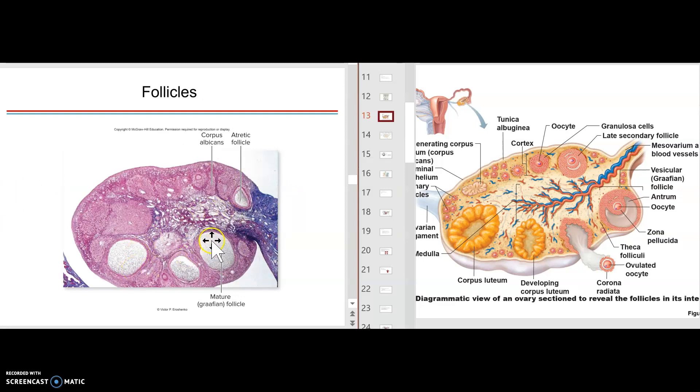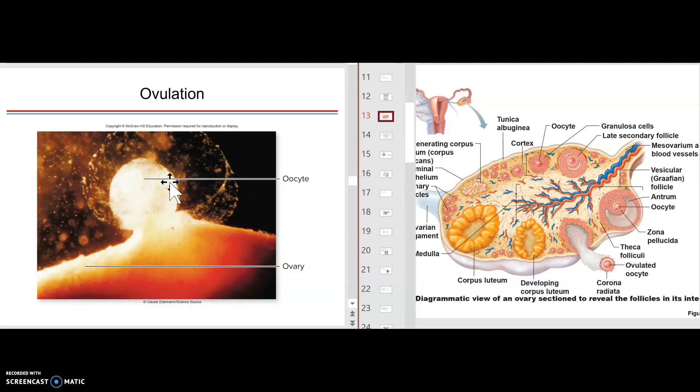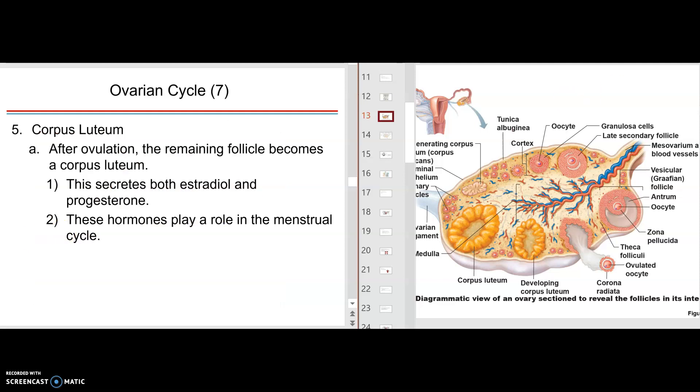So here again, it's a follicle growing, mature graafian follicle. Here's a picture of ovulation that's occurring. When the secondary oocyte is released, ovulation, then the space left behind in the ovary where this was will form a tissue called the corpus luteum. The corpus luteum, that's the space left after this. And this secretes both estradiol and progesterone, this corpus luteum. And these play roles in the menstrual cycle.